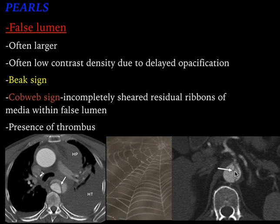Once there is a thrombus, it most often forms in the false lumen because there is no continuous flow — there is stasis of blood in the false lumen. These are the features which help in identification of the false lumen.